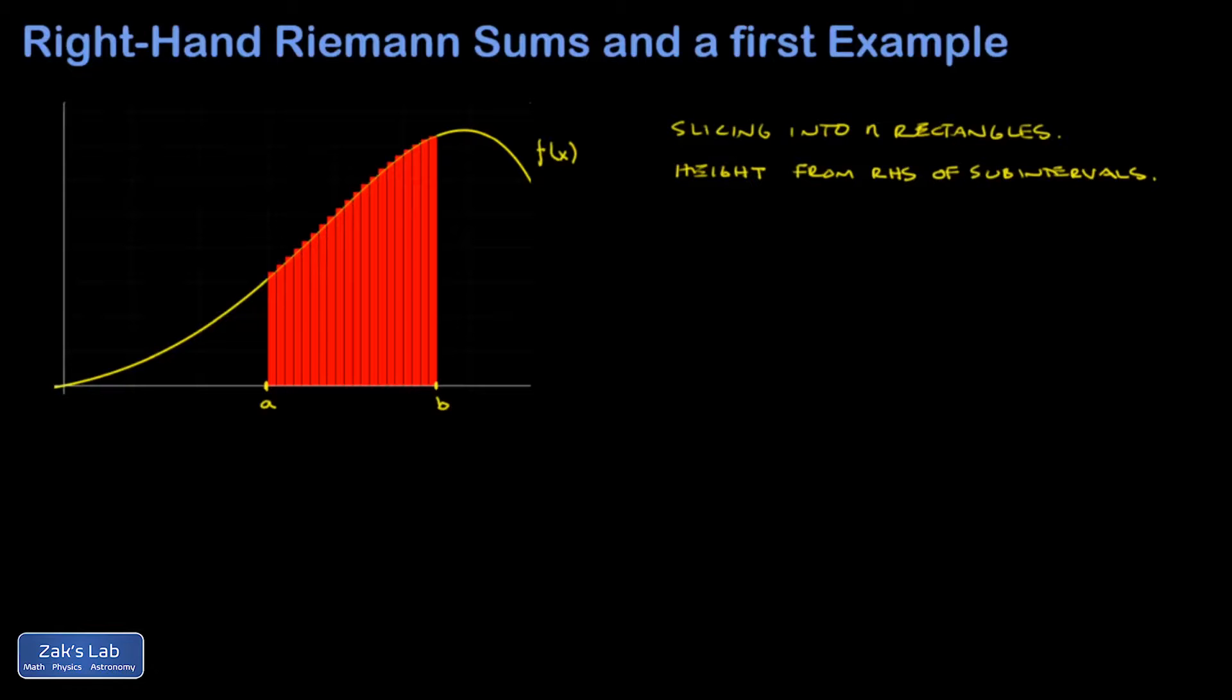The next thing we want to do is write down the width of each subinterval and I'm going to call that delta x. That's going to be the total width of the interval divided by how many rectangles we chopped it into, so b minus a over n.